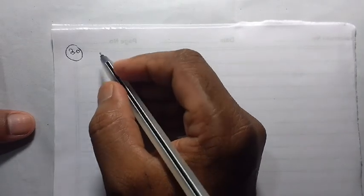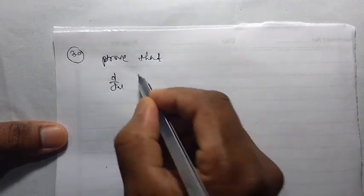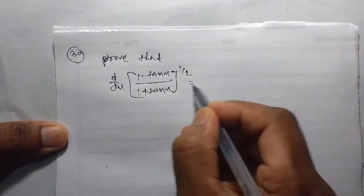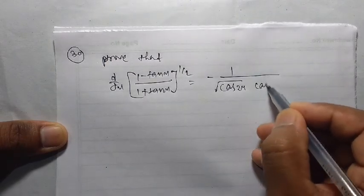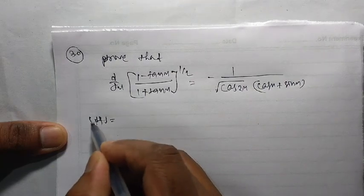Welcome to my channel Beat the Myth. I am Babith Ramon. Today I need to discuss an important problem on derivatives. This is question number 30, element of methodics, exercise 7C. The question is: given, prove that d by dx of (1 minus tan x) by (1 plus tan x), whole to the power half, is equal to minus 1 by cos root over cos 2x into cos x plus sin x.